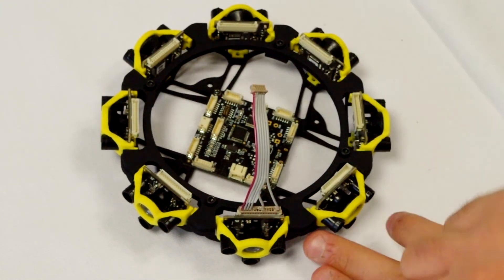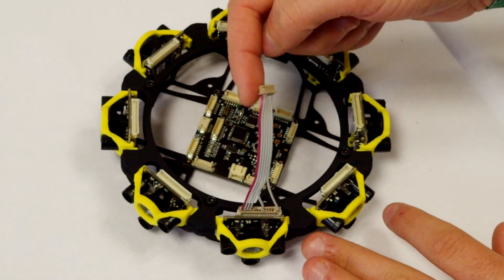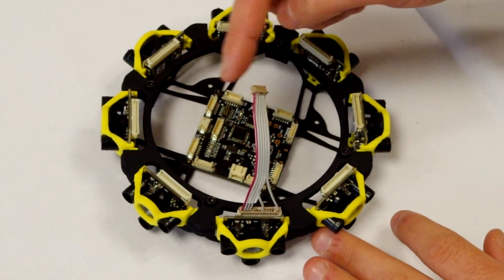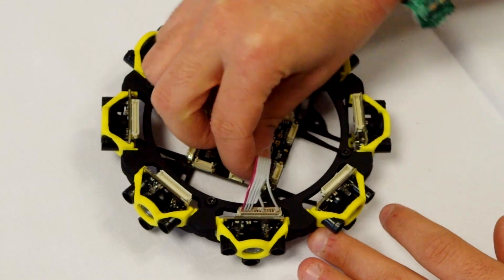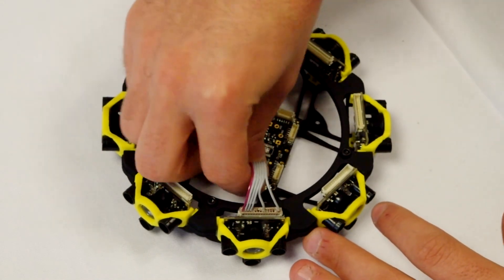As a reminder, when you face the sensor, the red wire of the ribbon should be on the left. And then you can connect the ribbon to the hub.